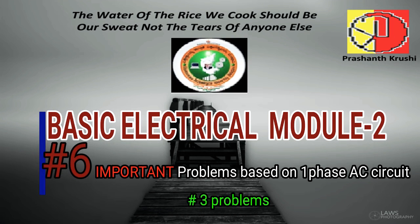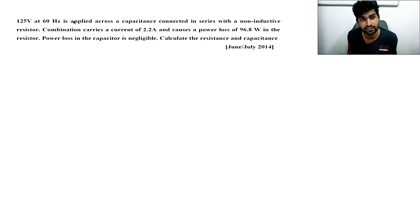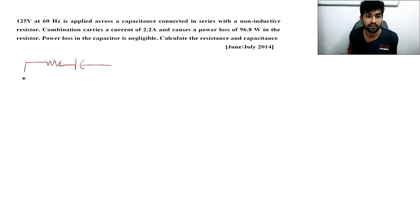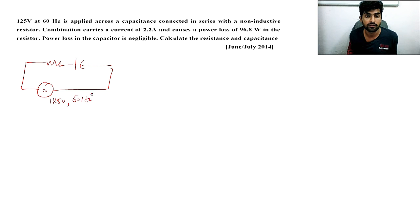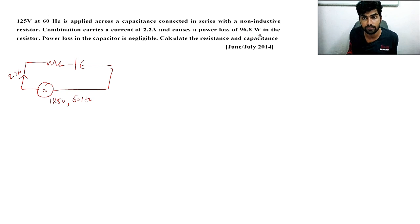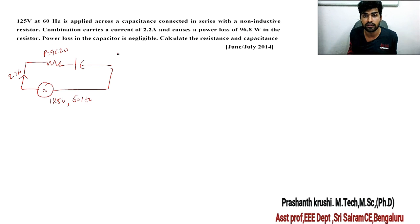Welcome back to our class. The question is: 125 volts at 60 Hz is applied across a capacitor connected in series with a non-inductive resistor — so it's definitely an RC circuit. The series combination has a voltage of 125 volts at 60 Hz, and the combination carries a current of 2.2 amps and causes a power loss of 96.8 watts in the resistor.